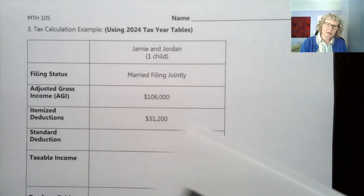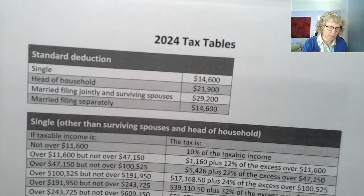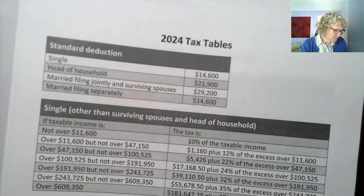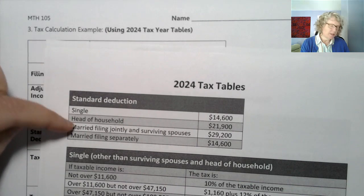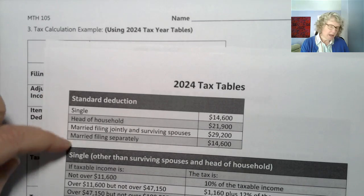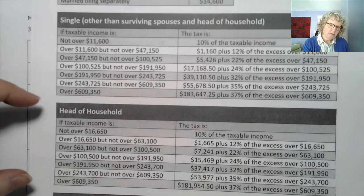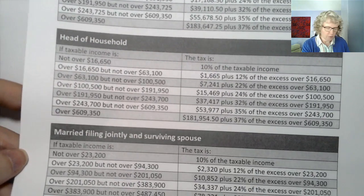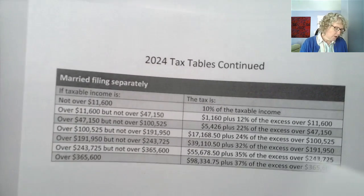You should have the 2024 tax tables — or whatever year your instructor gave you. The first table tells us what the standard deduction amounts are, and then we have a table for each type of filing: single, head of household, married filing jointly — which is also in the textbook — and married filing separately.